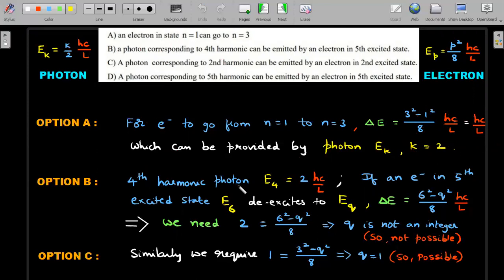Go to option B. The fourth harmonic photon can be emitted by an electron in fifth excited state. First, let's write what is the fourth harmonic photon. That would be substituting k=4, which is 2 times hc by L.